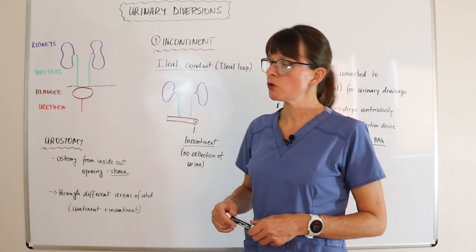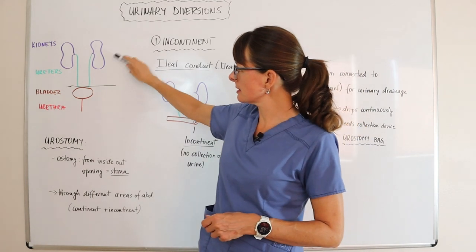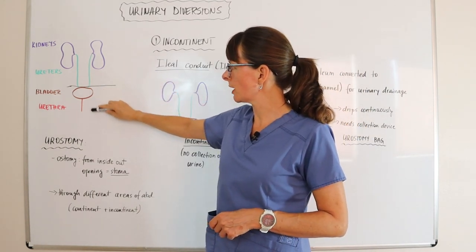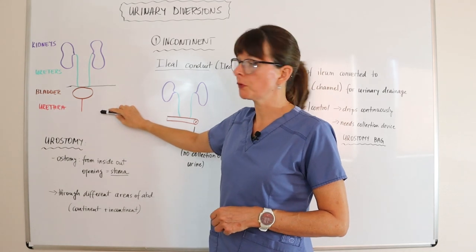The normal urinary tract consists of the kidneys, the ureters, the bladder and the urethra, and this is also the flow of the urine.